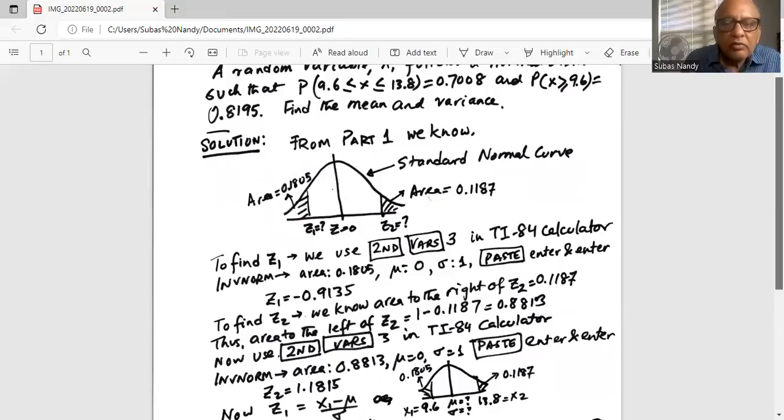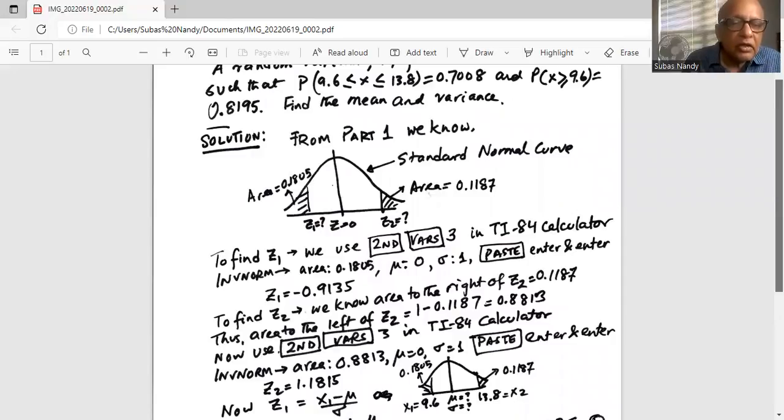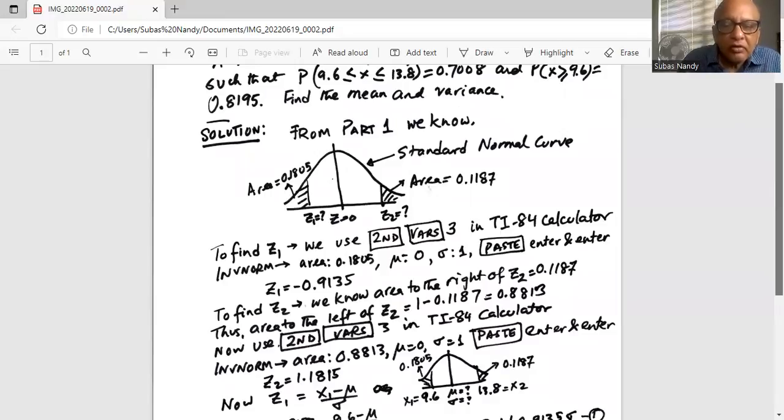To find z2 we know the area to the right but the calculator takes area to the left. Total area under the curve is 1. So area to the left of the unknown z2 is 1 minus 0.1187 which is 0.8813. Again we will use second verse 3 in TI-84 calculator. Area to the left is 0.8813, mu is 0, sigma is 1 because it is a standard normal variable. And we get z2 is 1.1815.